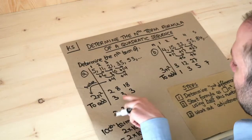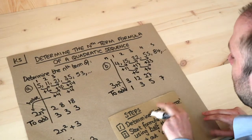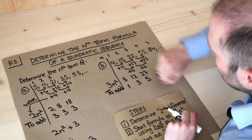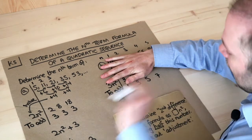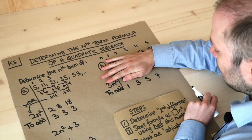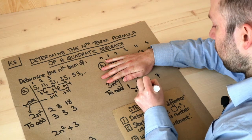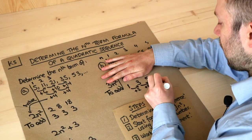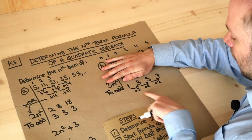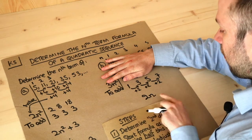We have 3n² and we need to add on whatever this sequence 1, 3, 5, 7 is. This time it's not a constant, so we work out the formula for it separately. The sequence is going up by 2 each time — it's an arithmetic sequence. When the first difference is 2, we put 2 in front of n, giving us 2n.